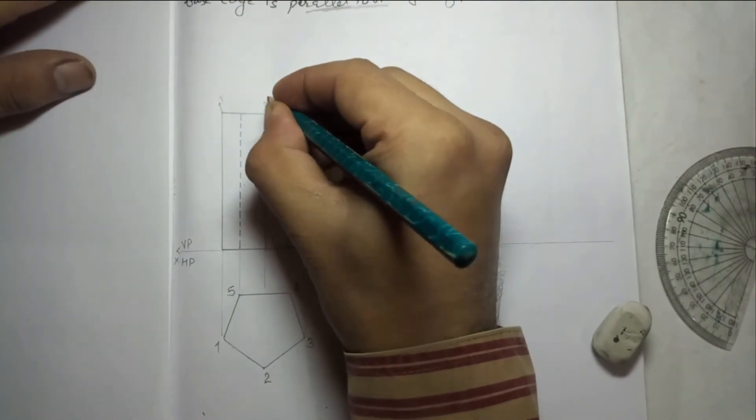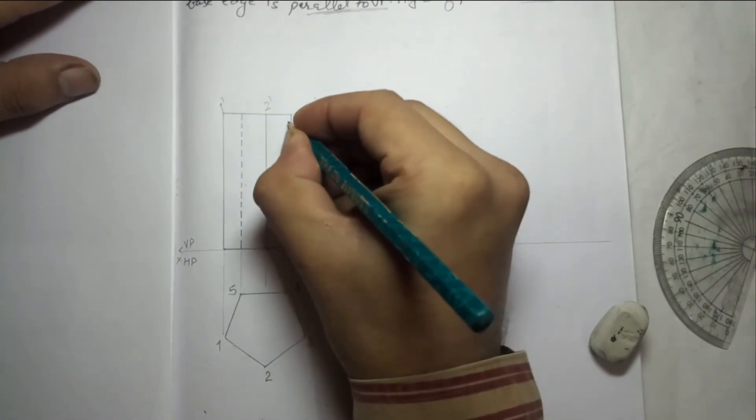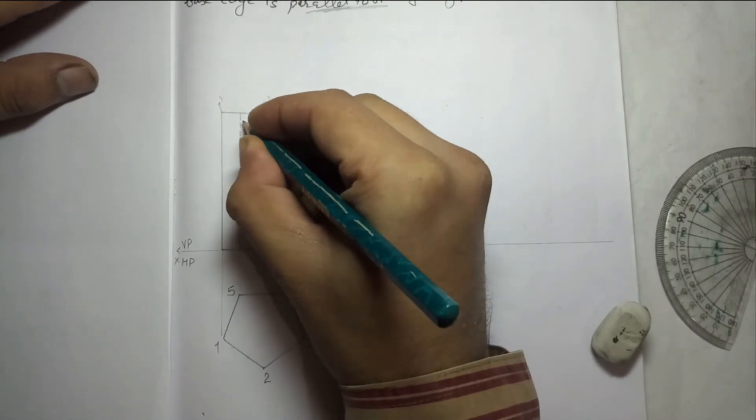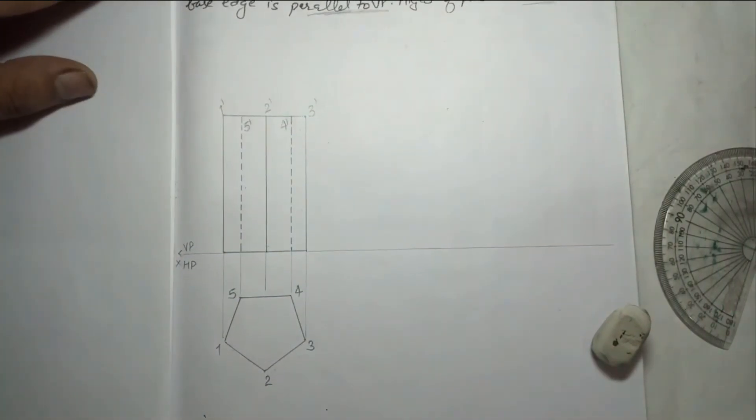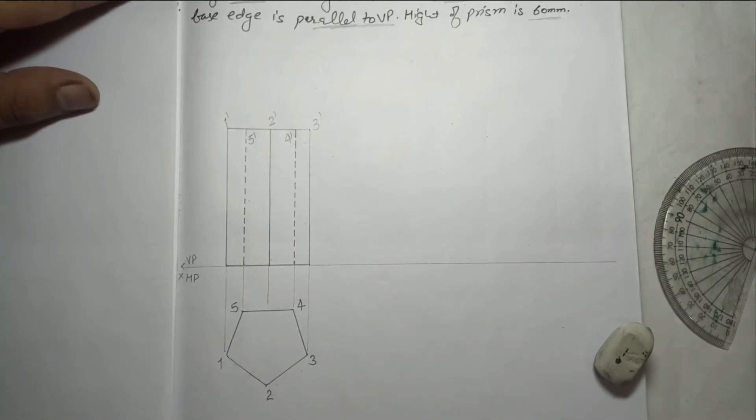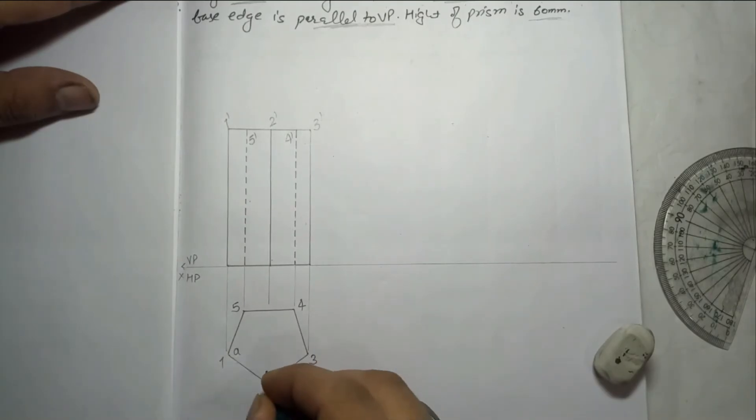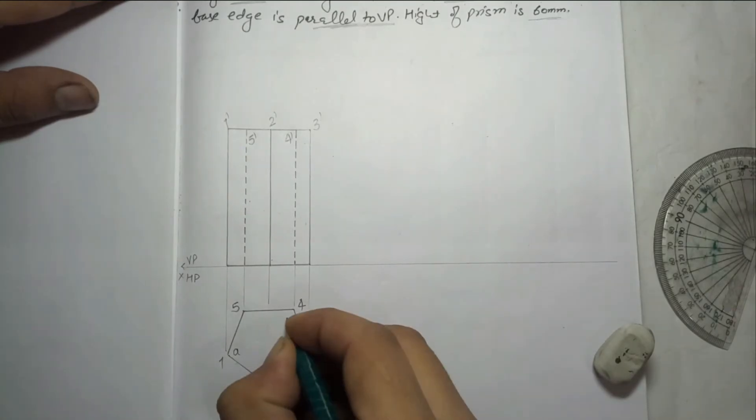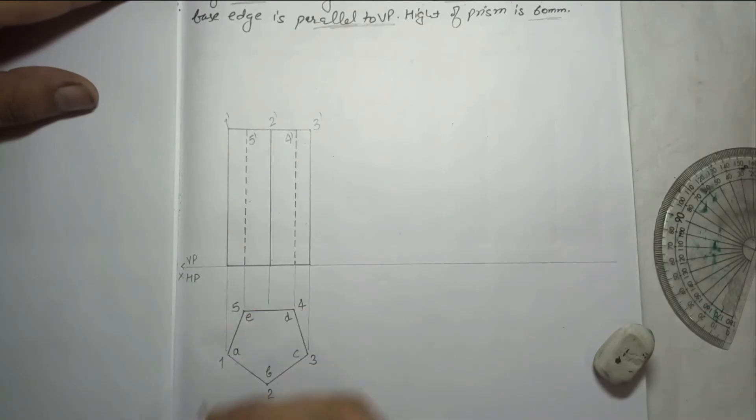This is the easiest way to give the numbering. Otherwise you have to imagine the solid. If a solid is coming which you have not seen, then it will be a difficult task. So you can follow the same rule: start from extreme left corner, anti-clockwise, give the numbering.